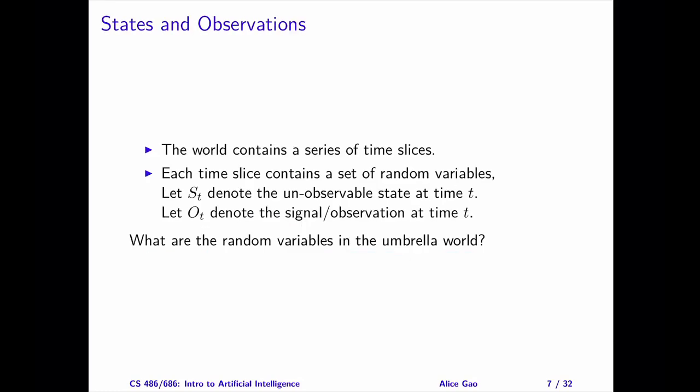Let's model the umbrella story using a Bayesian network. We need to reason about events over time, so let's define the time steps. For the umbrella story, a day is a reasonable time step. Every day, we observe a new signal and we may want to update our estimate of the state.